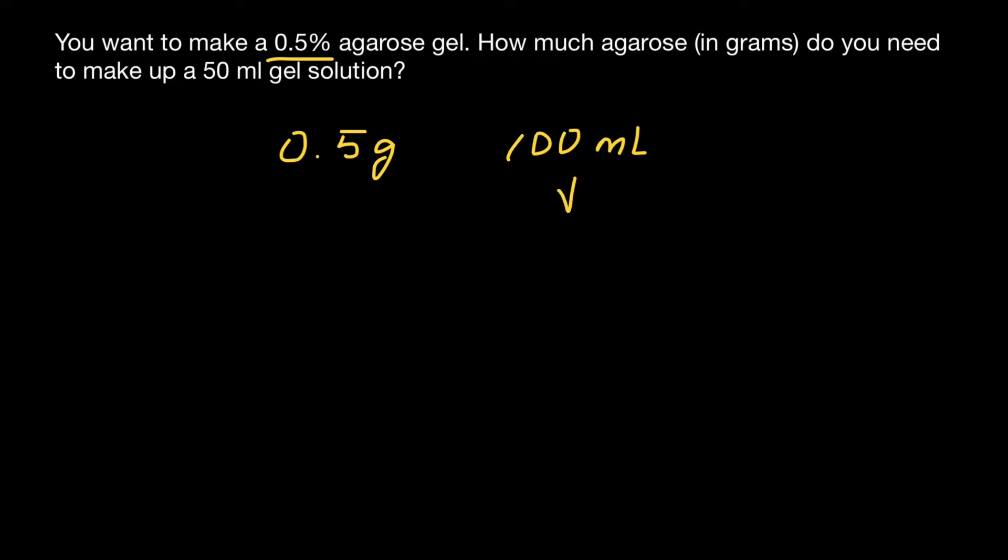If you need to make only 50 milliliters, which is twice smaller than this number, you also have to take twice smaller amount in grams of agarose.